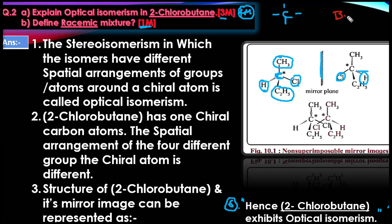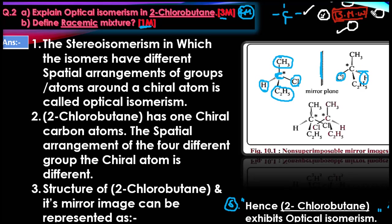Beyond the textbook, let us understand with an analogy. Suppose you have a BMW car and you take photos from different angles — front, left, right, back side. The car is the same BMW, but all the photos are different. Similarly, the carbon atom is the same but the four groups attached — CH₃, H, C₂H₅, and Cl — are different.